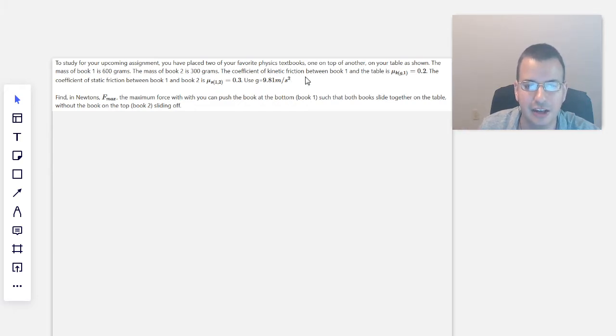Coefficient of kinetic friction - kinetic is when there's relative motion between the two surfaces - between book 1 and the table is 0.2. That's why you have G and 1: G for ground, 1 for book 1. It makes sense, 0.2.